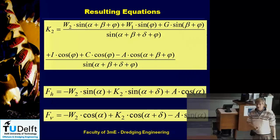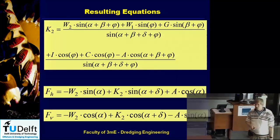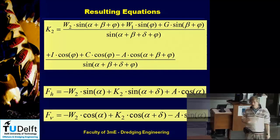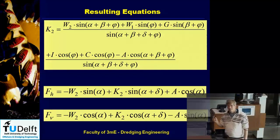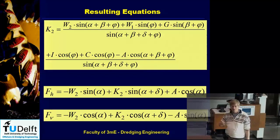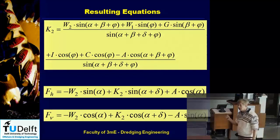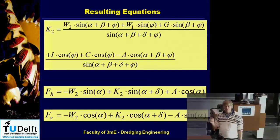We had resulting equations containing all the possible forces: the pore pressure force on the blade, pore pressure force on the shear plane, the gravity force, the inertial force, the cohesive force, and the adhesive force. In these equations, I use capital letters for forces and small letters for stresses like cohesive strength and adhesive strength. K2 is a force which is not horizontal, not vertical — it's under a certain angle depending on the external friction angle.